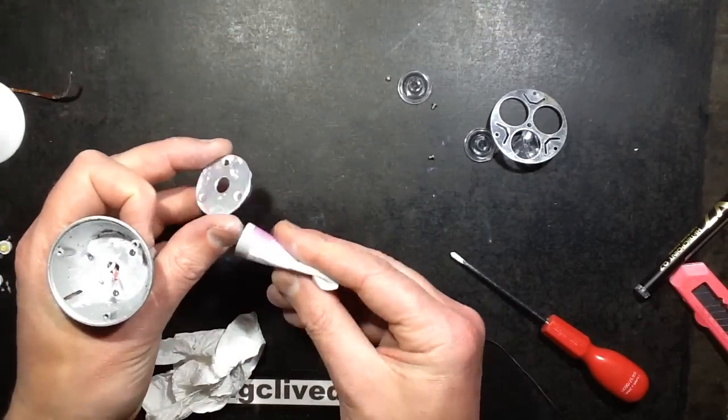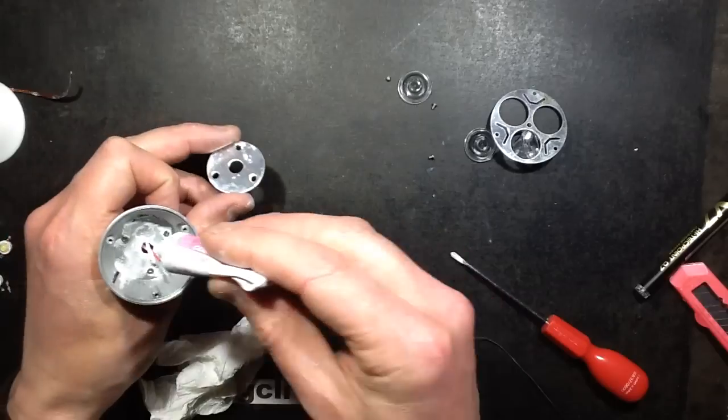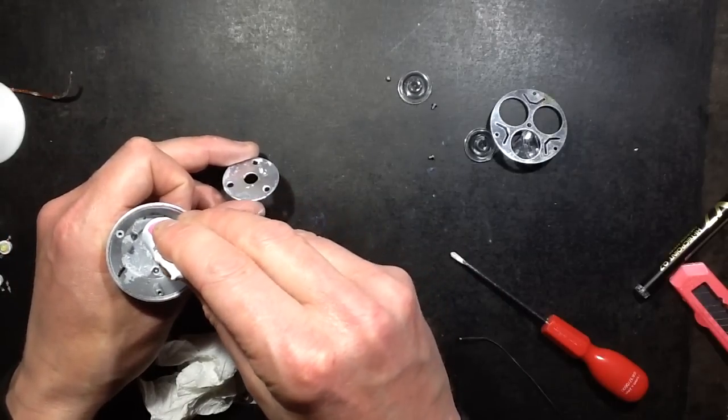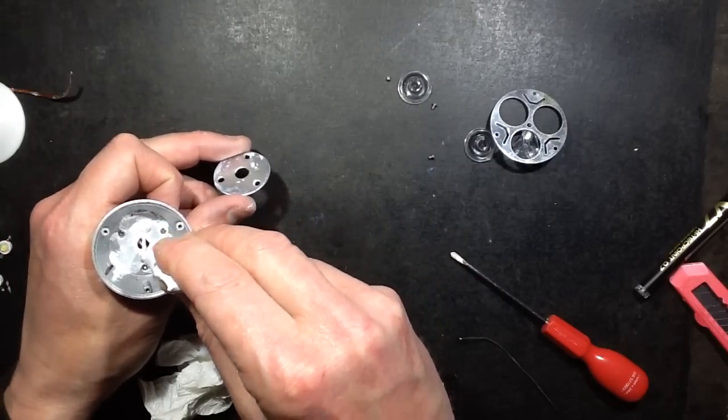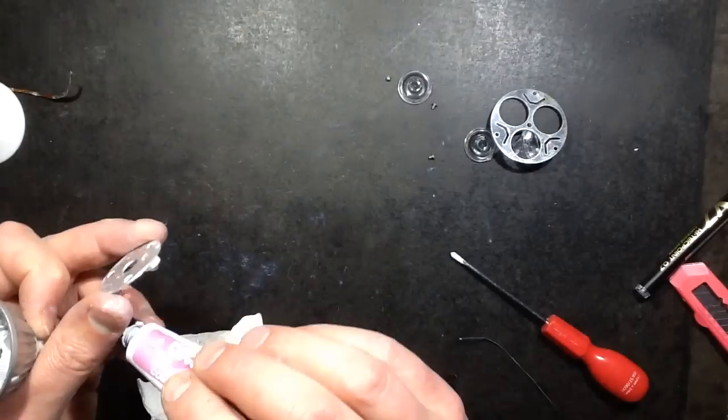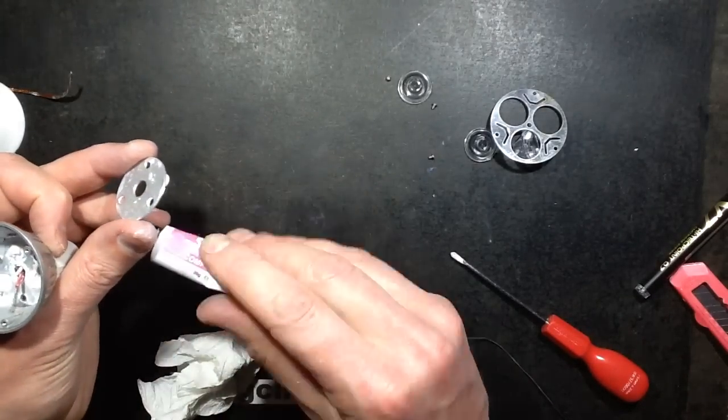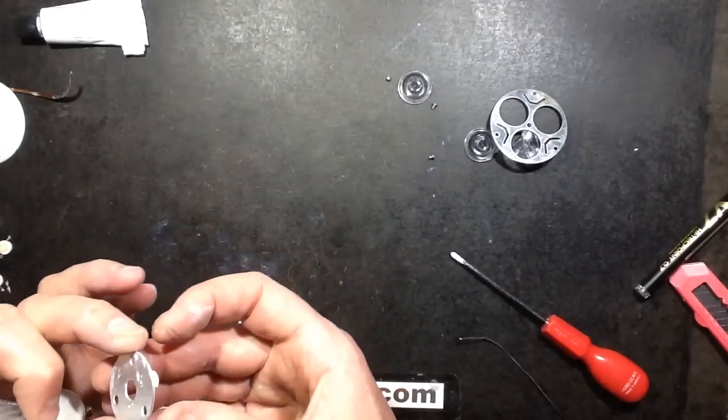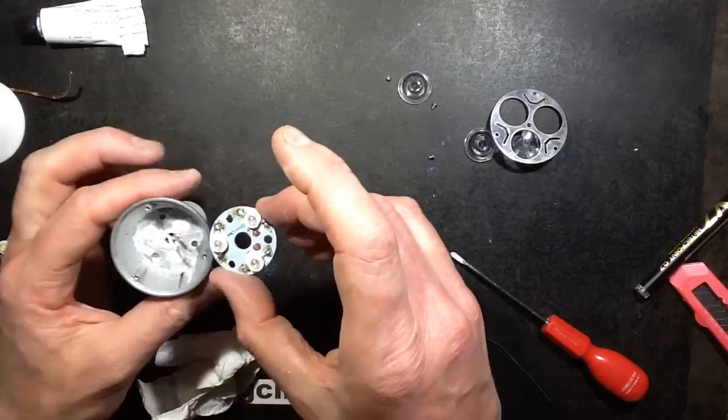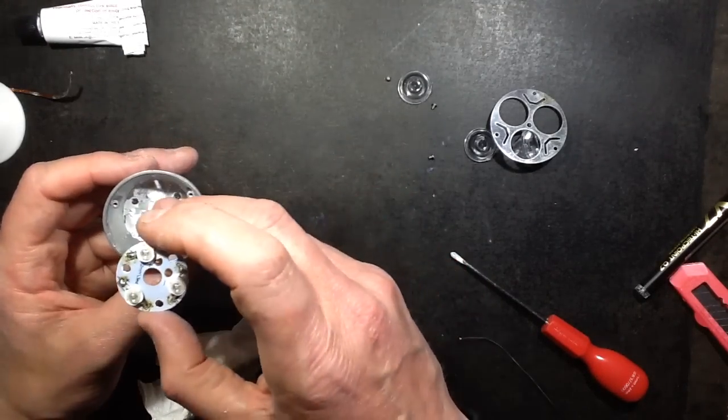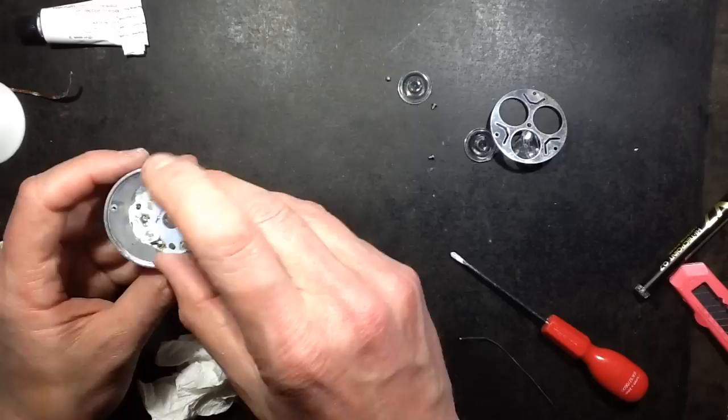I think I'll put it in the back of the housing. It looks like they've put maybe three blobs in the back and then squished the circuit board onto it. They've certainly used plenty which makes a refreshing change. Right, and I'll feed this through the hole.